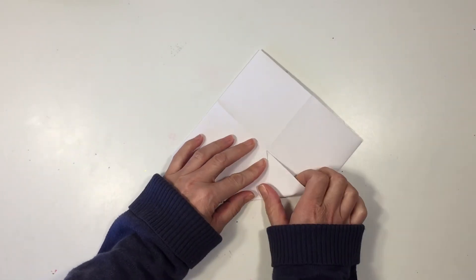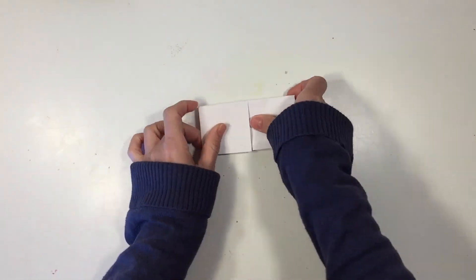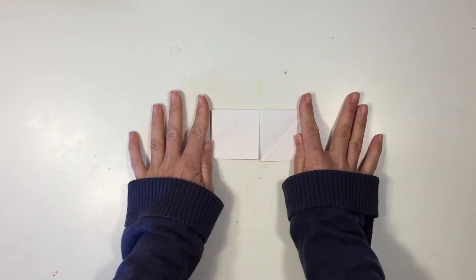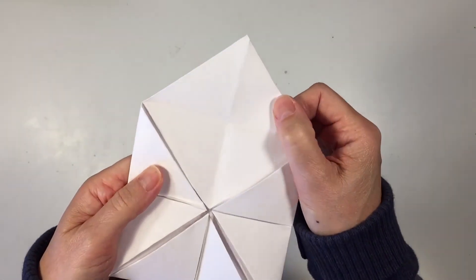Next you're going to flip the whole thing over and fold each corner in. Then again I'm going to fold it over in half, and this just makes it easier to play the game. The basic game structure is done.